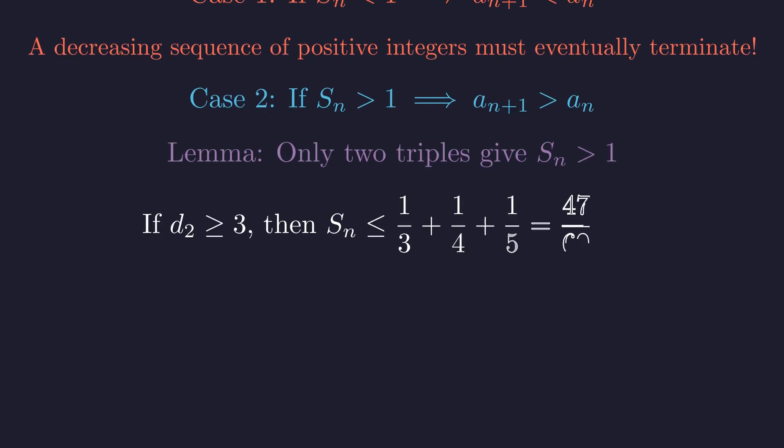If d2 is at least 3, then d3 is at least 4, and d4 is at least 5. The sum S_n would be at most 1/3 + 1/4 + 1/5, which is 47/60. This is less than 1.